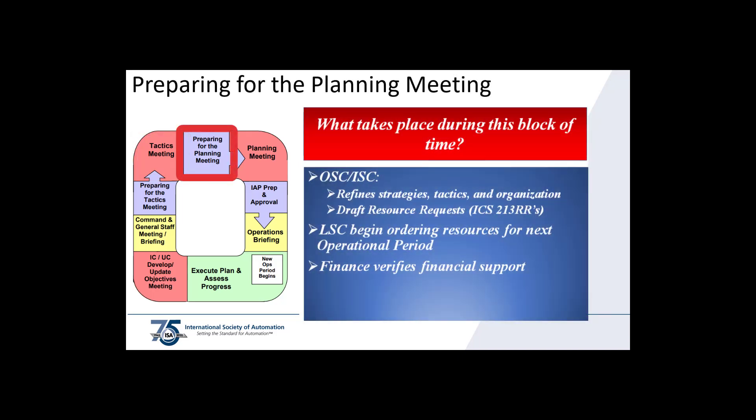During this block of time, the team collaborates to identify support needs and assign specific resources to accomplish the plan. Specifically, the operations section chief refines the strategies, tactics, and organization, and drafts resource requests or ICS-213Rs. The logistics section chief begins ordering resources for the next operational period. Finance verifies financial support is available for the resources being ordered.